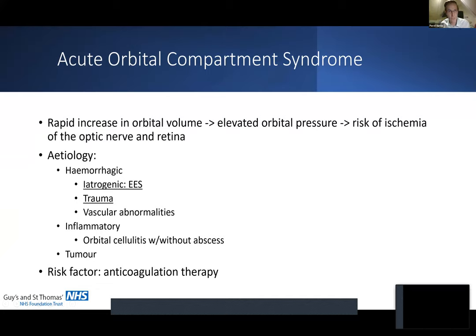I'm going to be talking really about acute orbital compartment syndrome, which means rapid increase in orbital volume, which then results in elevated orbital pressure and risk of ischemia of the optic nerve and retina. This happens most commonly in our scenarios after FESS or during FESS. Traumatic cause is the most common, but maxillofacial colleagues would probably deal with this especially in the UK in the first place. There are also some more rather rare causes like vascular abnormalities, orbital cellulitis with or without abscess if it is rapidly growing, and some tumors can rarely present in such a way. Risk factor is always anticoagulation therapy.